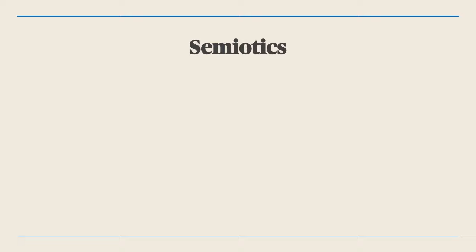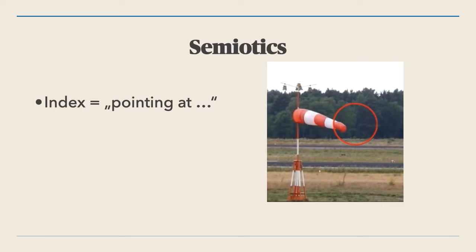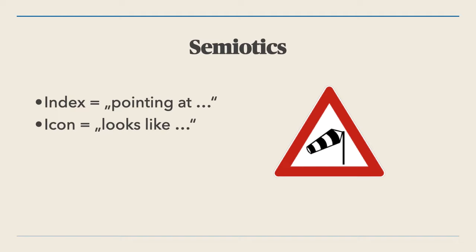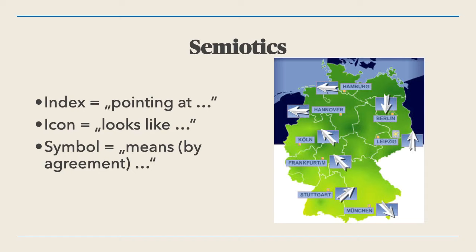Among his many categorizations, we find the distinction between index — which is assigning meaning by pointing at things, so we might ascribe the index function to a windsock, which in a way points at the wind — and icon, something that is similar to something else, thus creating a bridge of meaningfulness.